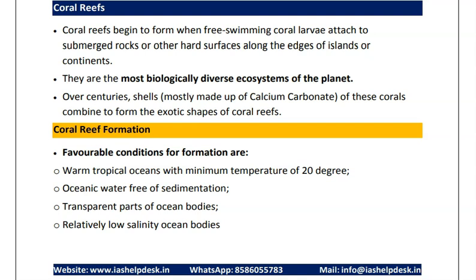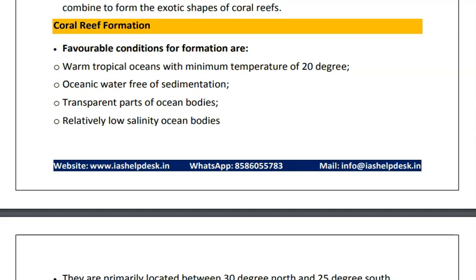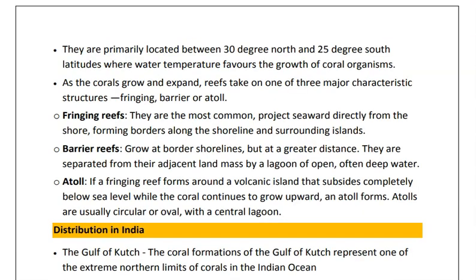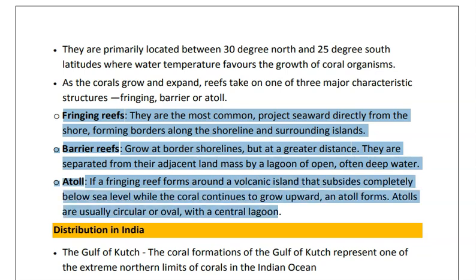Coral reef formation is very sensitive — even a small temperature or salinity difference leads to coral bleaching. Coral reefs are primarily located between 30 degrees north and 25 degrees south where water temperature is above 20 degrees centigrade. Corals are divided into three types: fringing reef, barrier reef, and atolls. Fringing reefs are attached to the land. Barrier reefs are formed near the land but the land and corals are separated by a lagoon or water body.